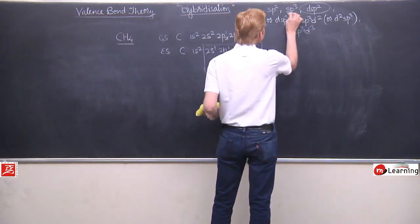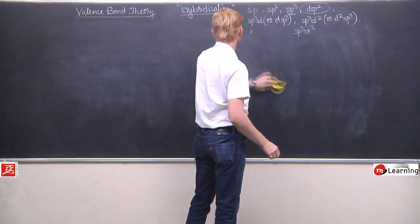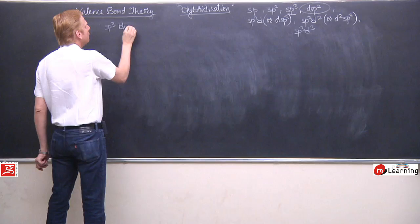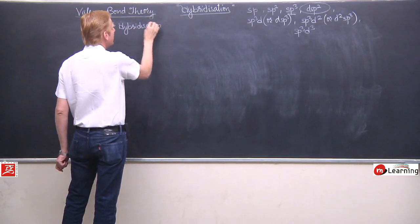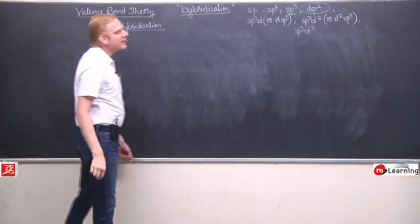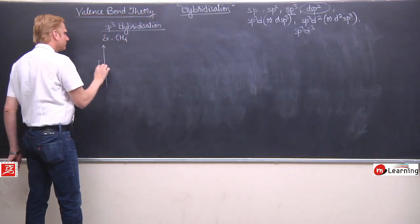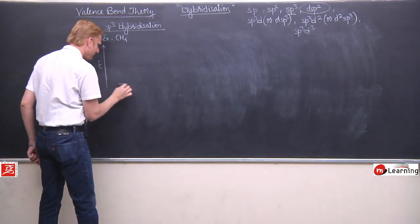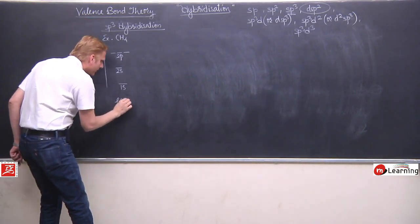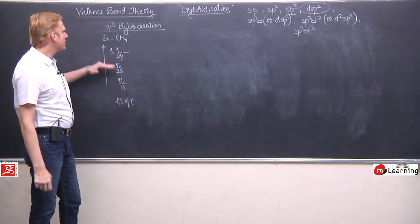Abhi hum start kar rahe hain SP3 ka matter, kyunki aapke saamne hai methane ki problem — hum isko kaise solve karte hain, aaiye dekhein. Methane mein kya problem thi, kya solutions the — ek baar phir hamare saamne aa raha hai. We are now taking the details of SP3 hybridization. The example we have selected to explain this type is of methane. Think about the energy of various orbitals.